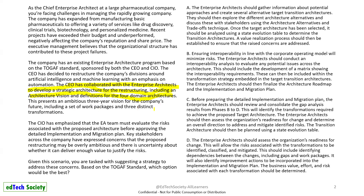This presents an ambitious three-year vision for the company's future, including a set of work packages and three distinct transformations. The CEO has already talked with the EA team and they are developing the vision, roadmap, and strategic architecture. Because they mention a set of work packages and the final roadmap, we can be quite sure they are in Phase F of TOGAF.